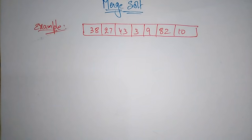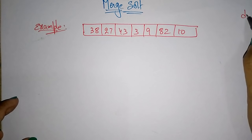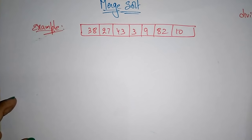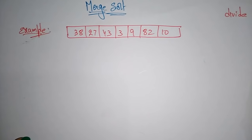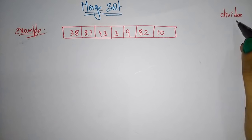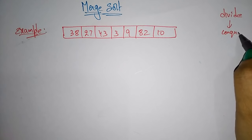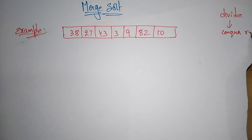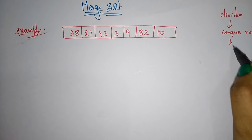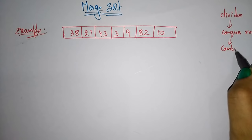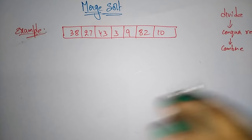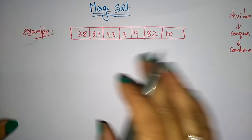Using the merge sort technique, first you have to divide — just like divide and conquer. This is an example of the divide and conquer method. So divide, and after that you have to conquer recursively. After that you have to combine, which means merge — merging.